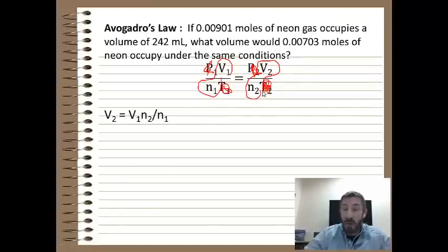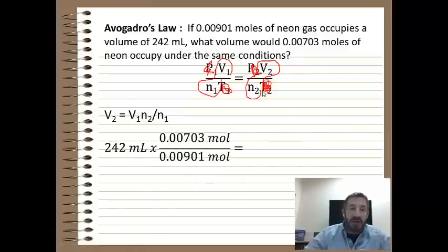And so if we rearrange this equation, we'll say V2, which is what we're looking for, we're trying to find the volume, is equal to V1 times n2 divided by n1. Now we just need to insert our values. And so we end up saying 242 milliliters times 0.00703, divided by 0.00901 moles, the number of moles cancel. And when you multiply those out and divide, you get the final answer of 189 milliliters.